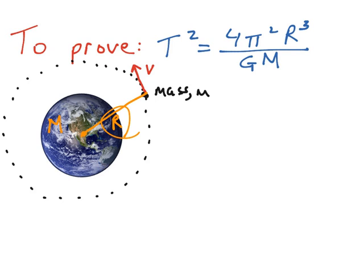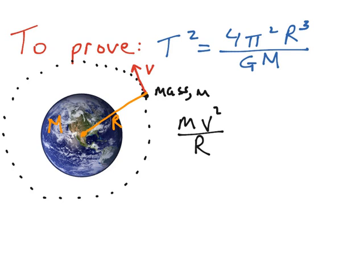At each point on the orbit of the satellite, it has a velocity V that is going to be at a tangent to that orbit. The first step in the proof is to write down the two forces working in this case. We first know that the centripetal force formula says that the mass of the satellite multiplied by its velocity squared, divided by the radius of that orbit, gives us the force.